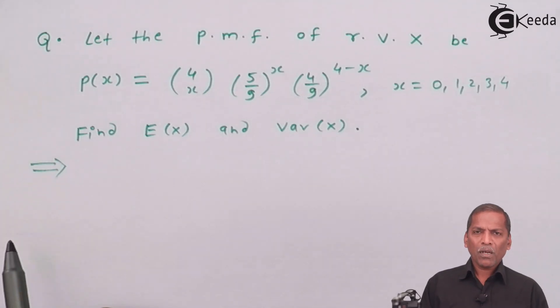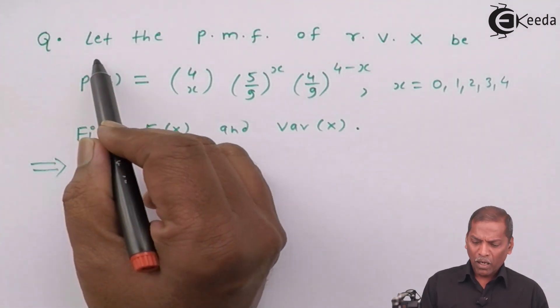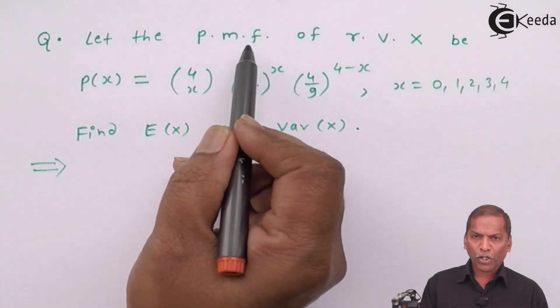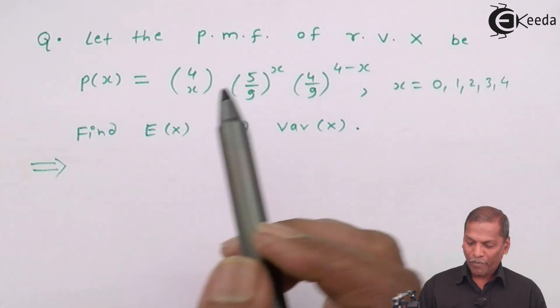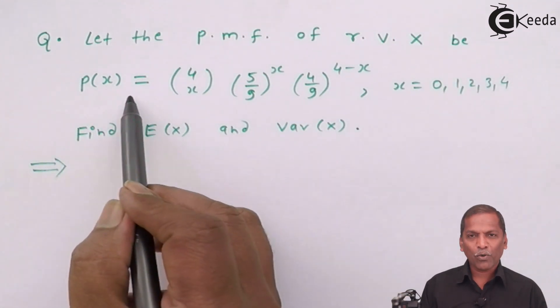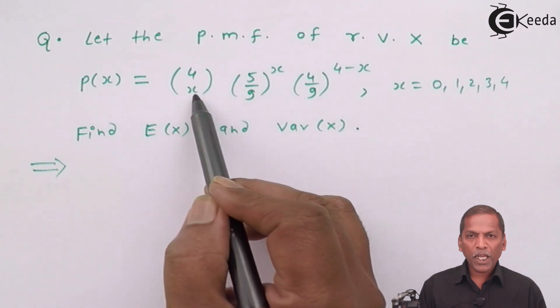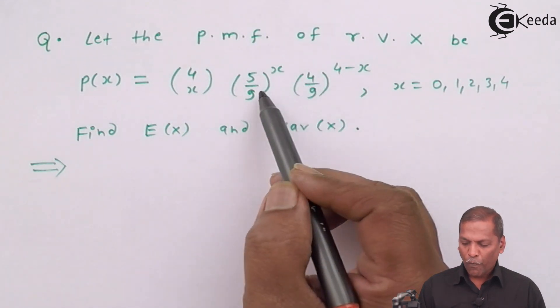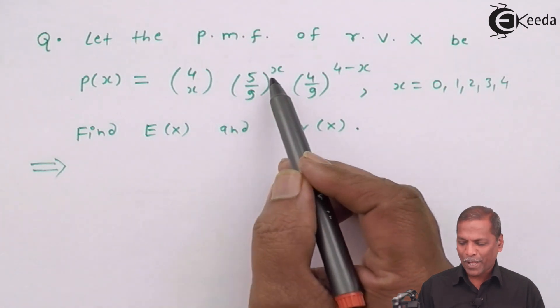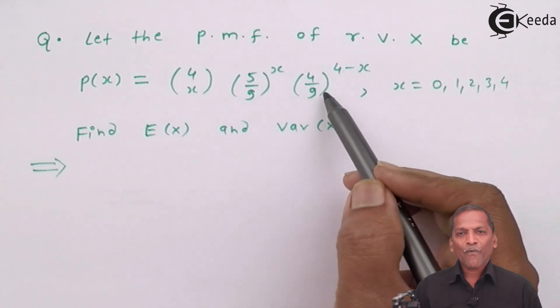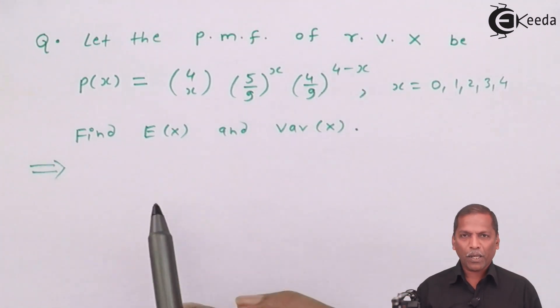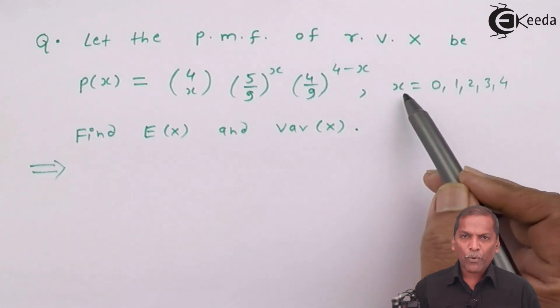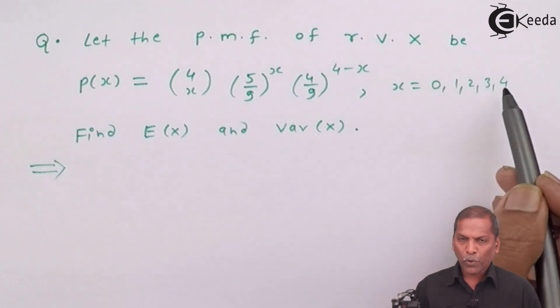Let the probability mass function of a random variable X be P(X) is equal to 4CX into (5/9) raise X into (4/9) raise (4 minus X), comma, X takes value 0, 1, 2, 3, 4.